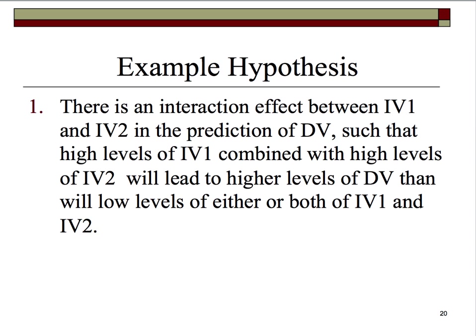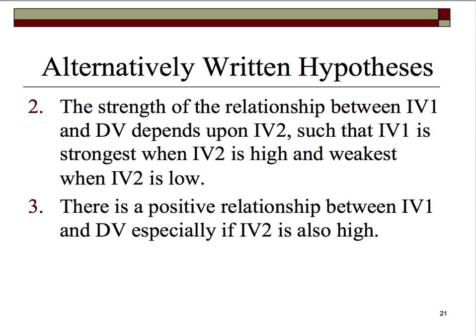There are alternative ways of writing these sorts of interaction hypotheses. For example: the strength of the relationship between IV1 and DV depends upon IV2, such that IV1 is strongest when IV2 is high and weakest when IV2 is low. Or alternatively: there is a positive relationship between IV1 and DV, especially if IV2 is also high. These all say the exact same thing. If we were to plot these hypotheses and collect data, it might look something like this.